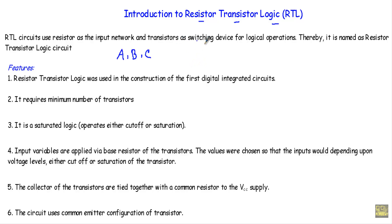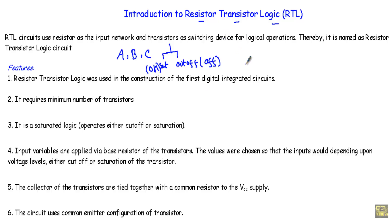The transistors are used as switching devices for logical operations, so the transistor will be either in saturation or in cutoff mode. Cutoff mode means the transistor will be in a fully off state, and saturation means the transistor will be in a fully on state. As the logic circuits are made of resistors and transistors, these circuits are known as Resistor Transistor Logic circuits.